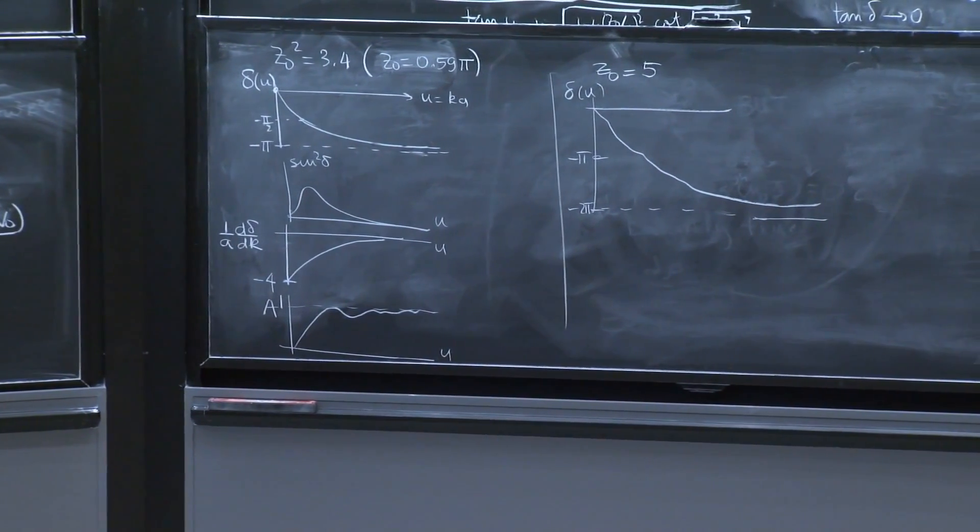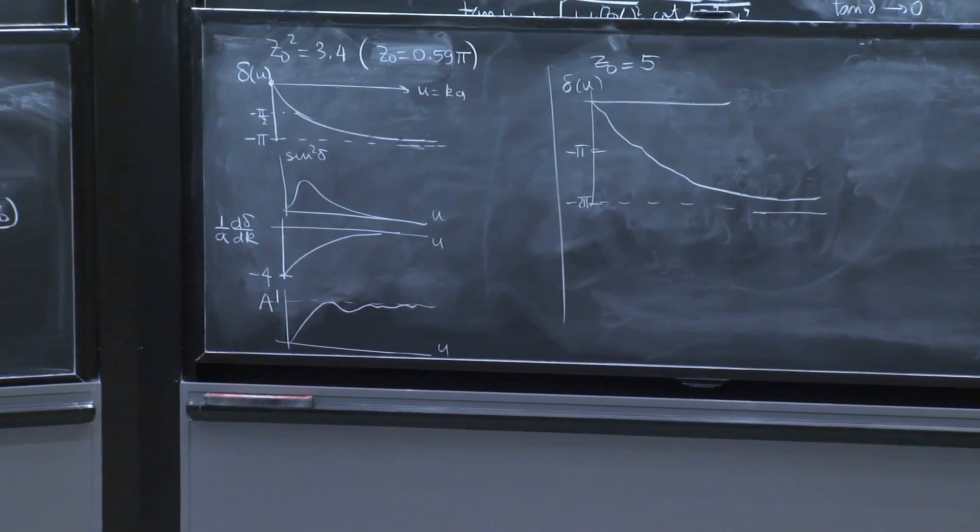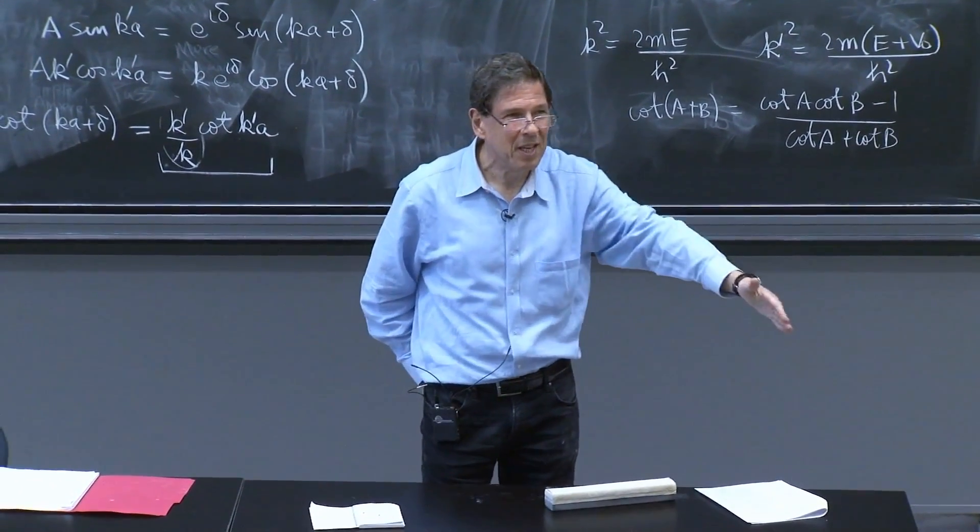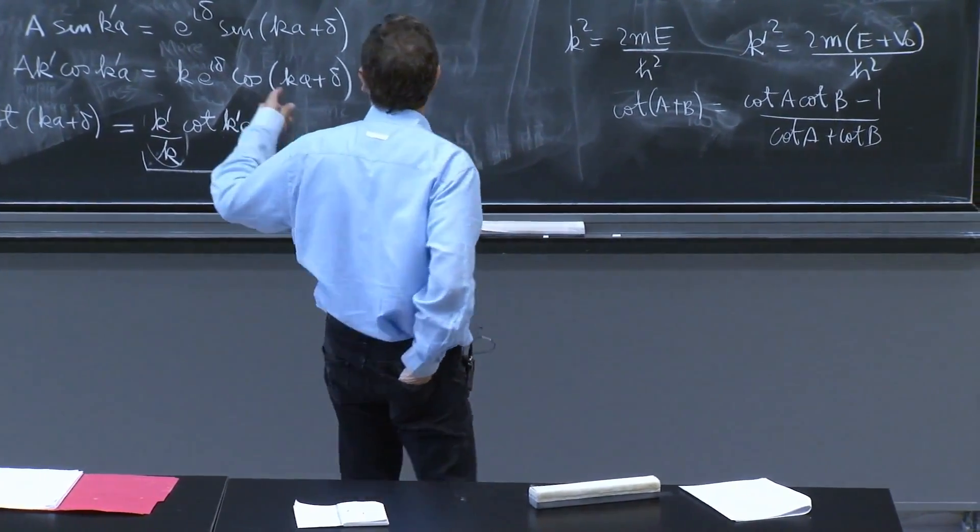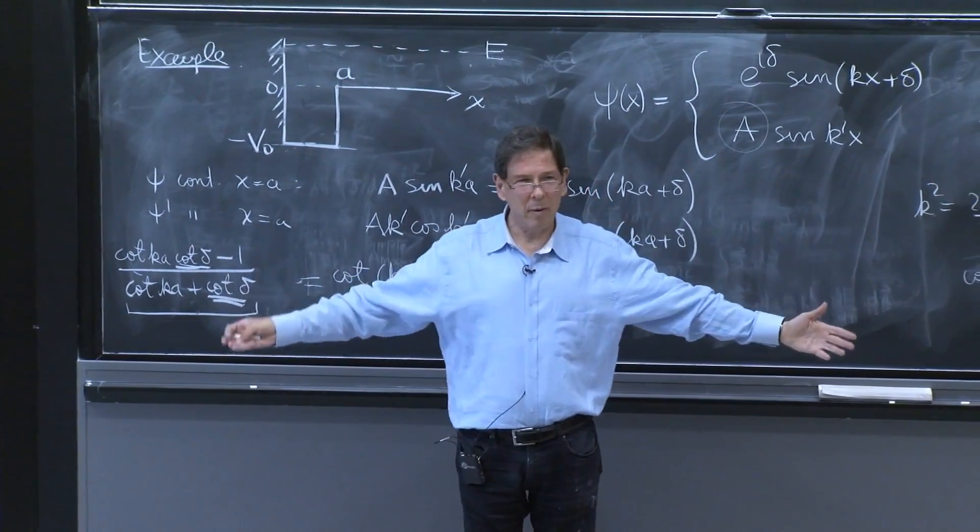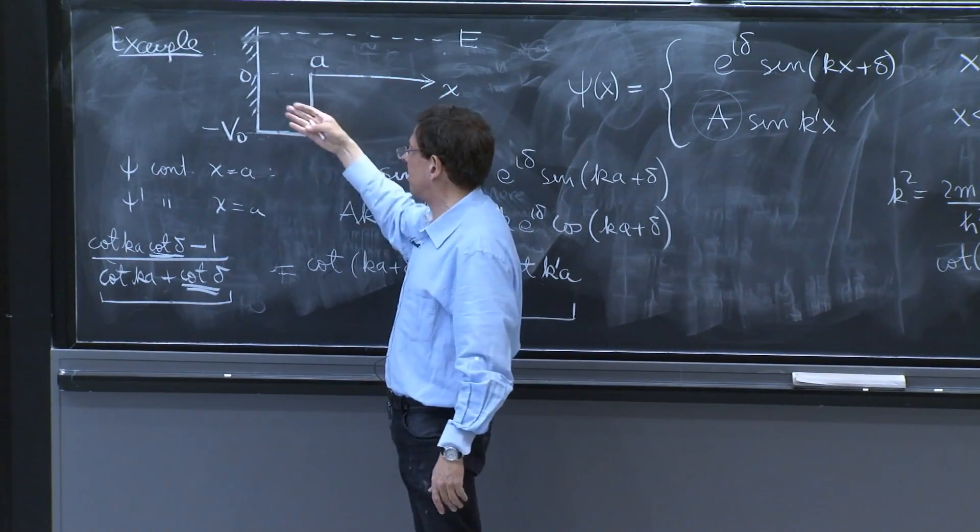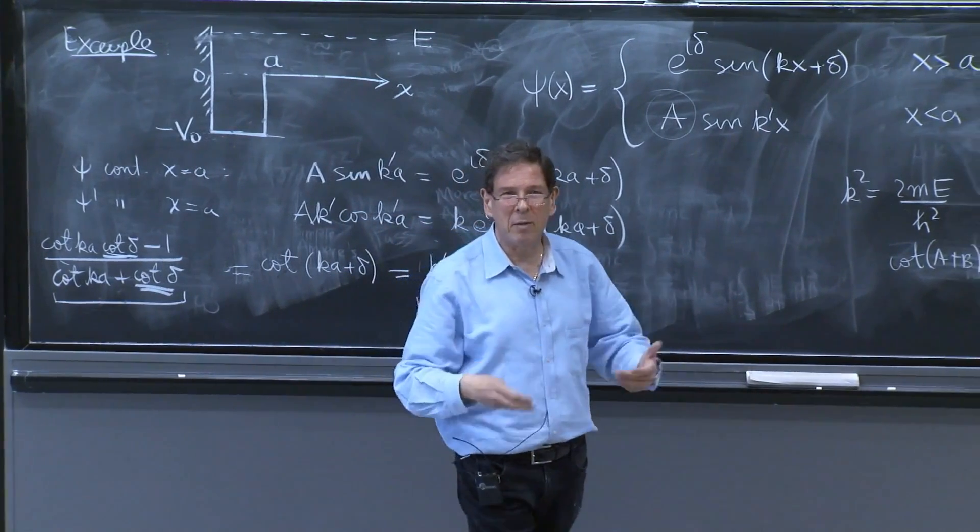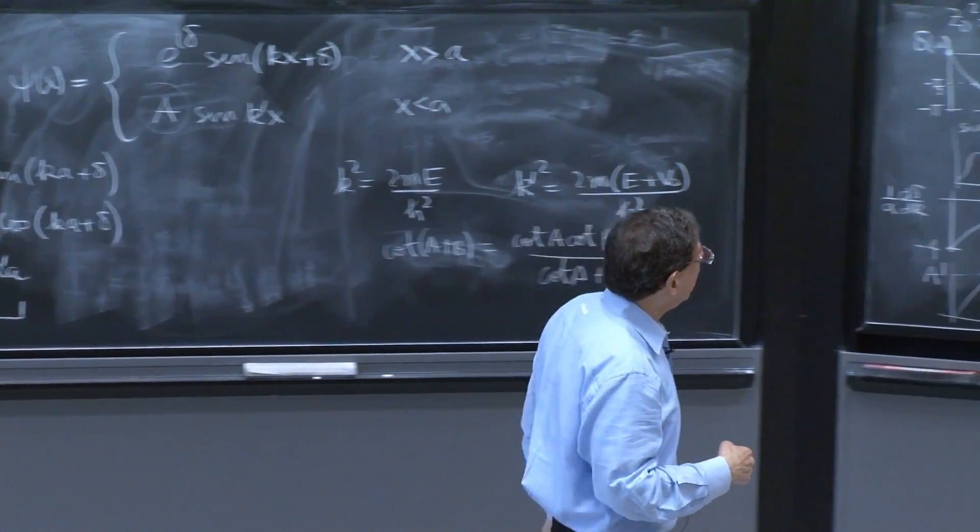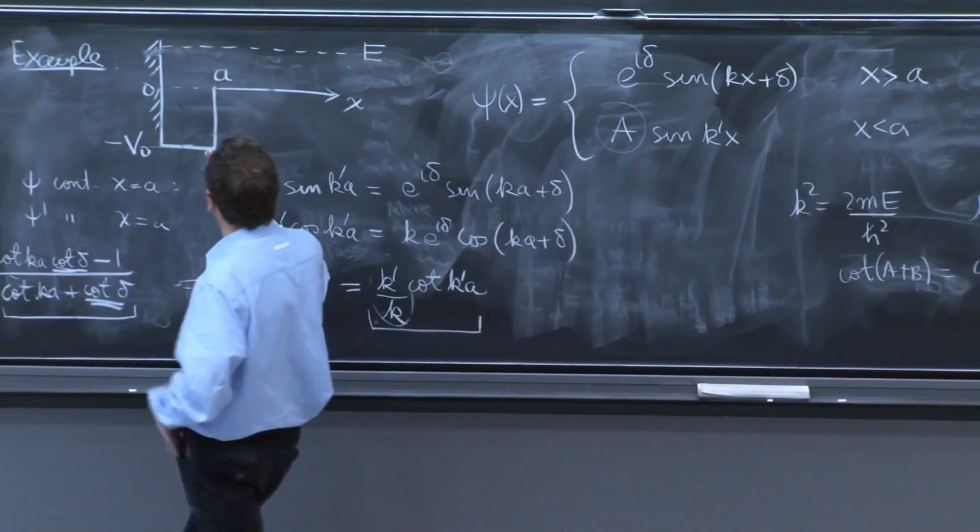It does funny things. So what's really happening is that there is a relation between how much the phase moves and how many bound states this potential has. And you say, why in the world? This calculation had nothing to do with bound states. Why would the phase shift know about the bound states? Well actually, it does. And here is the thing. If you remember, you've actually solved this problem in homework.